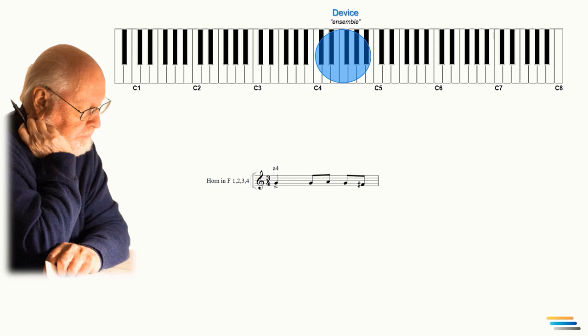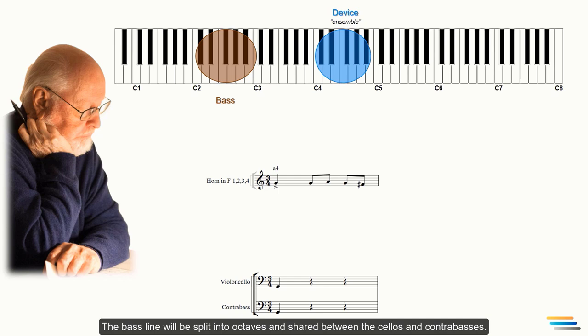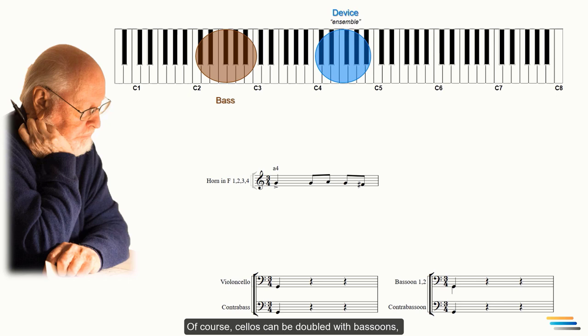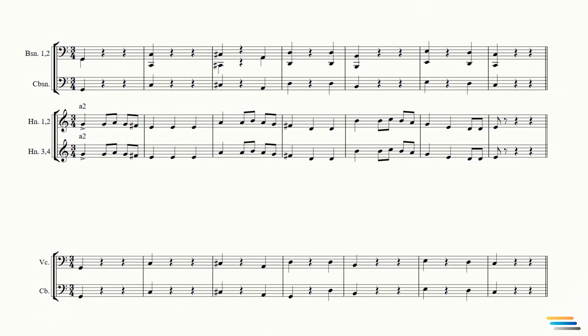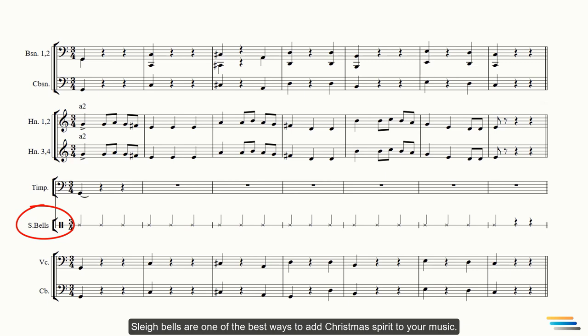The bass line will be split into octaves and shared between the cellos and contrabasses. Of course, cellos can be doubled with bassoons and double basses with the contrabassoon to make the bass line even stronger and more audible. This is a classic orchestration technique. Let's look at the score as a whole. Sleigh bells are one of the best ways to add Christmas spirit to your music. The timpani simply plays the first bar. The line under the note is the sign, let it vibrate. This sign indicates that the continued sound of the instrument should not be muffled after being struck. Let's listen to how it sounds.